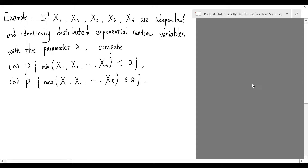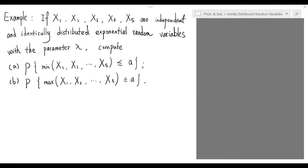If capital X1, X2, X3, X4, and X5 are independent and identically distributed exponential random variables with parameter lambda, compute the probability that the minimum among these 5 is less than or equal to a, and the probability that the maximum among these 5 is less than or equal to a.